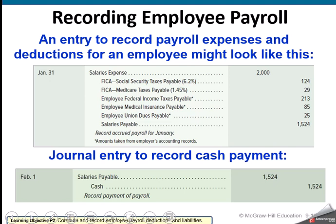Here is the journal entry — and those going on to take payroll accounting need to know these entries in that class too. We have salaries and wages expense, which is our gross pay. Then each deduction — Social Security, Medicare, federal income tax, medical insurance, union dues — comes out to arrive at their net paycheck. We debit the gross expense and credit all the individual payable accounts and net pay.